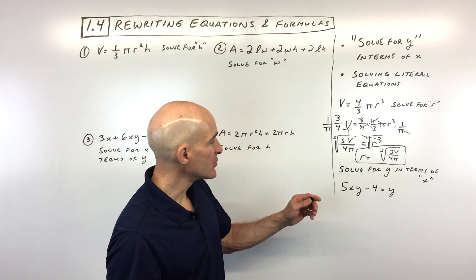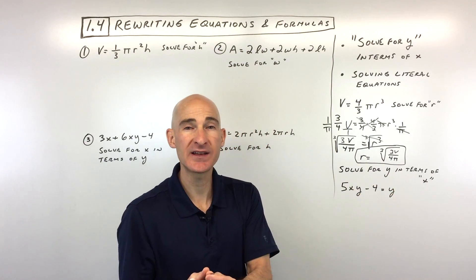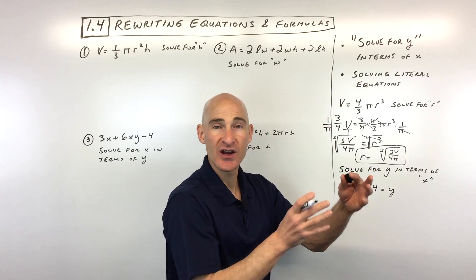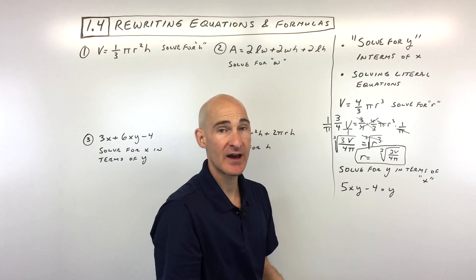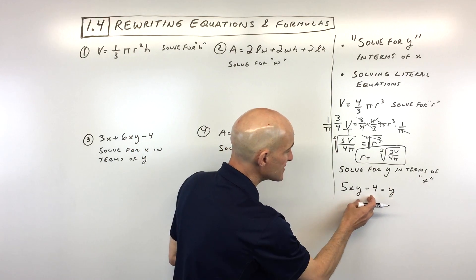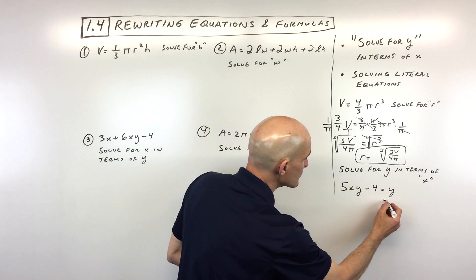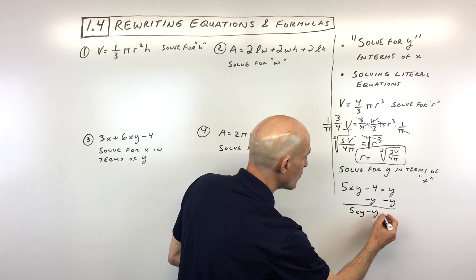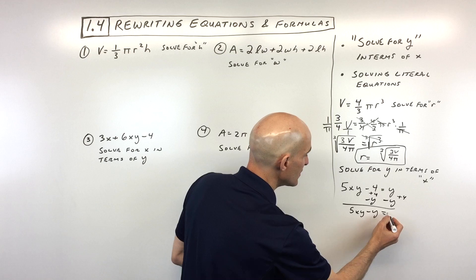The next example is a bit more challenging: solve for y in terms of x, meaning get y by itself with everything else — the x's and numbers — on the other side. The challenge here is that there's a y on both sides of the equation. So we get all terms containing y on one side by subtracting y from both sides, giving 5xy minus y on the left, and then adding 4 to both sides so those terms cancel on the right.